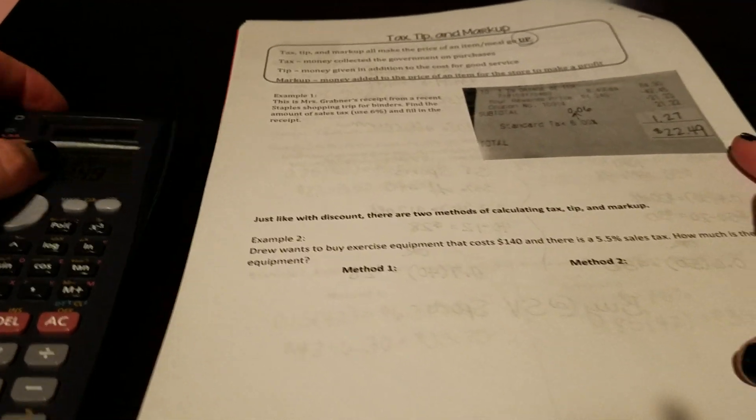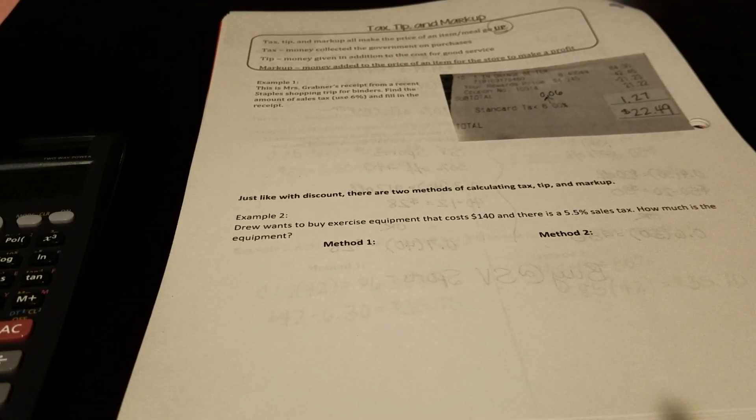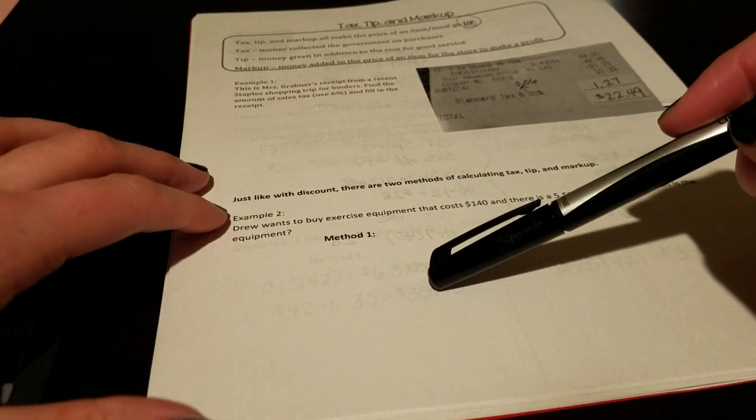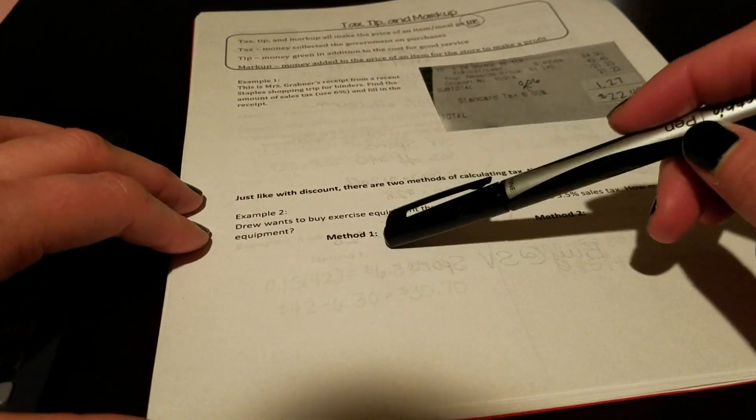Just like with discount, there are actually two methods of calculating tax, tip, and markup. So method 1 is going to be similar, only instead of doing a subtraction problem at the end, we'll now do an addition problem because this makes it go up.